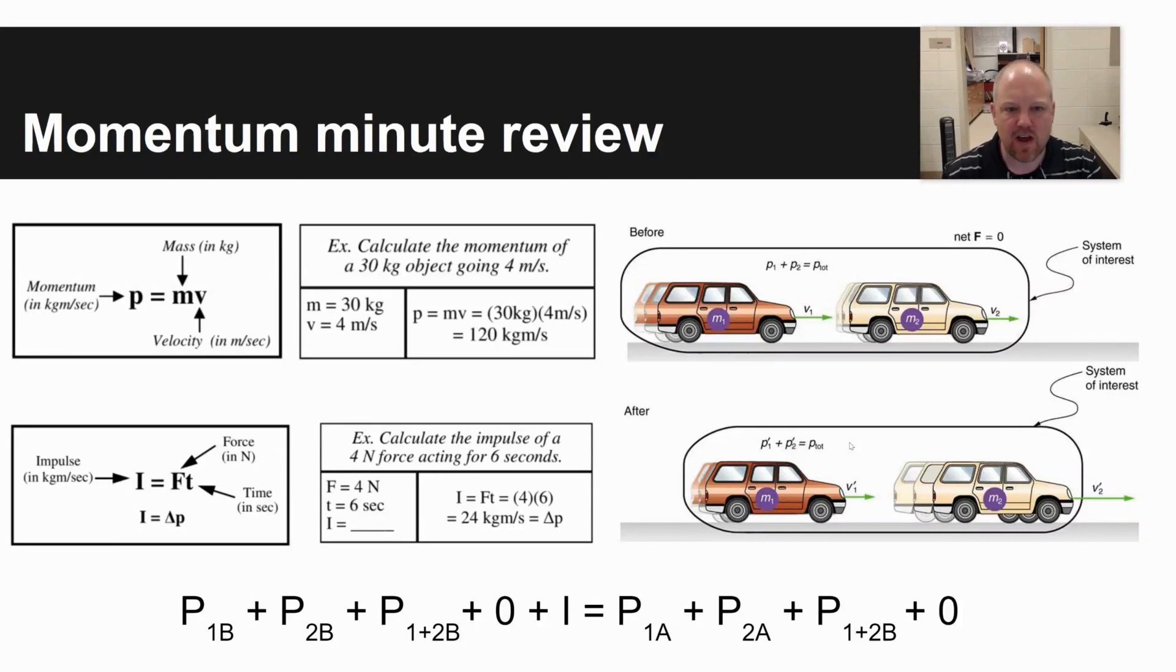The example that's given here, calculate the momentum of a 30 kilogram object moving 4 meters per second. P equals M times V, 30 times 4 is 120 kilogram meters per second.